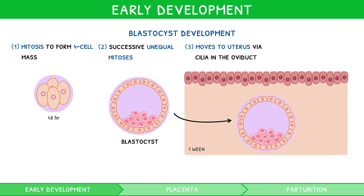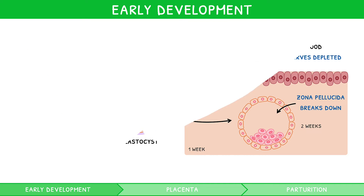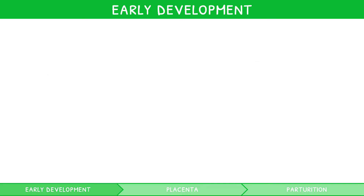By two weeks, the blastocyst is known as an embryo and has used up the food reserves within the cytoplasm, triggering the zona pellicida to break down. This causes the next stage of early development: implantation.